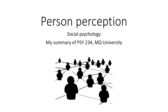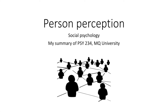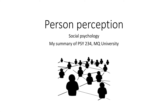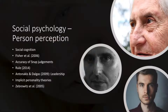This video is part of the social psychology series covering the topics of person perception. First of all, what is social cognition? It is where cognitive processes and structures are affected by social context and it influences social behavior.